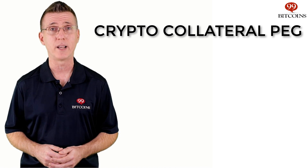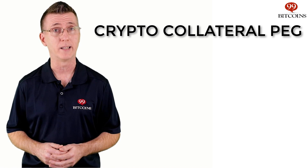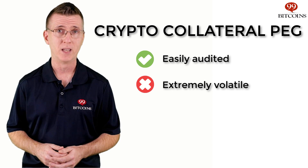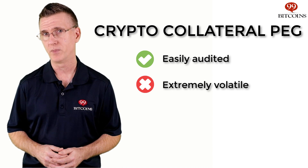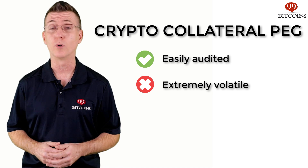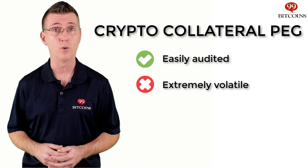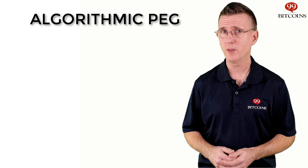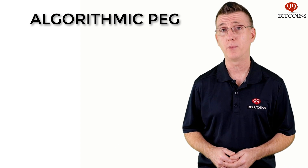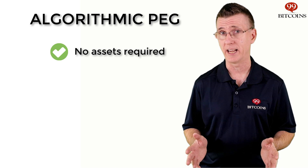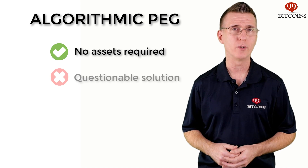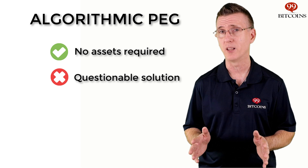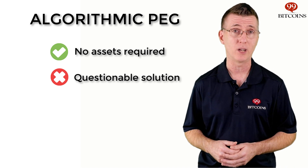Crypto collateralized coins, on the other hand, may have the benefit of viewing the collateral on the blockchain, but the collateral itself is extremely volatile. That's why a premium is needed. In many cases, the company will hold 150% or even more of the collateral needed to make up for possible drops in the cryptocurrency prices. Algorithmic pegging benefits from the fact that the company doesn't need to hold any asset on hand. However, many will argue that algorithmic pegging theory doesn't really work in real life, since manipulating the money supply isn't a guarantee the peg will hold.